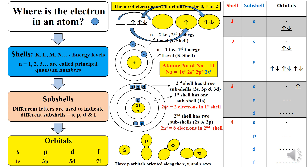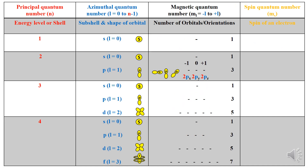A line notation represents an orbital while an arrow represents an electron. Quantum numbers identify and describe the electron in an atom, providing information about the energy level or shell of an electron, subshells, shapes of orbitals, number of orbitals, orientations of orbitals in space, and spin state of an electron. There are four quantum numbers: principal, azimuthal, magnetic and spin quantum number.